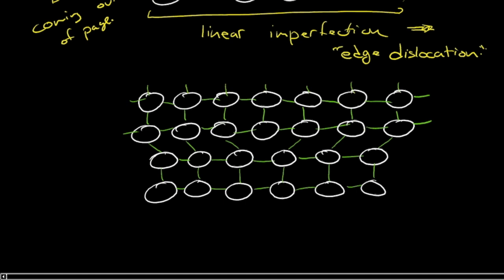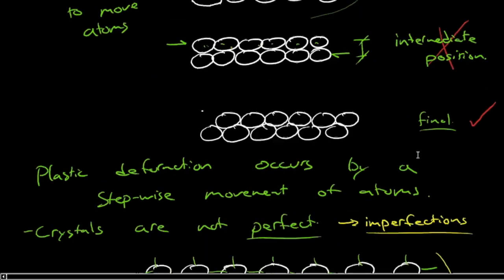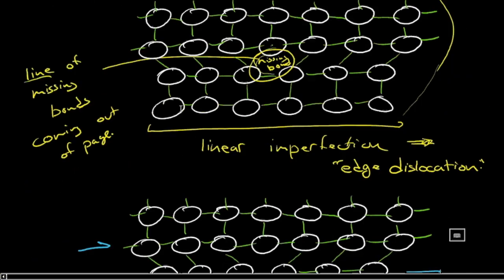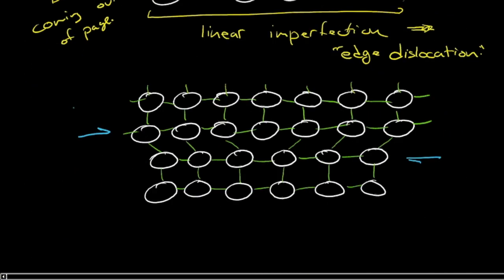So we have drawn that dislocation. And then what we're going to do is we're going to apply a shear stress, just like we did way back here. We applied a shear stress. So we're going to apply a shear stress to this crystal. There's our tau shear stress. And we're going to observe what happens.